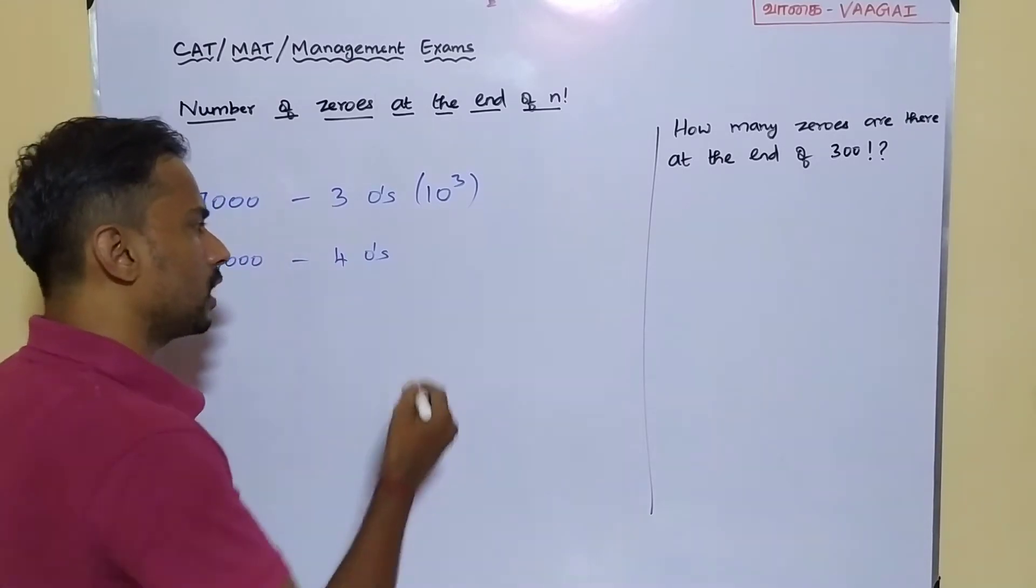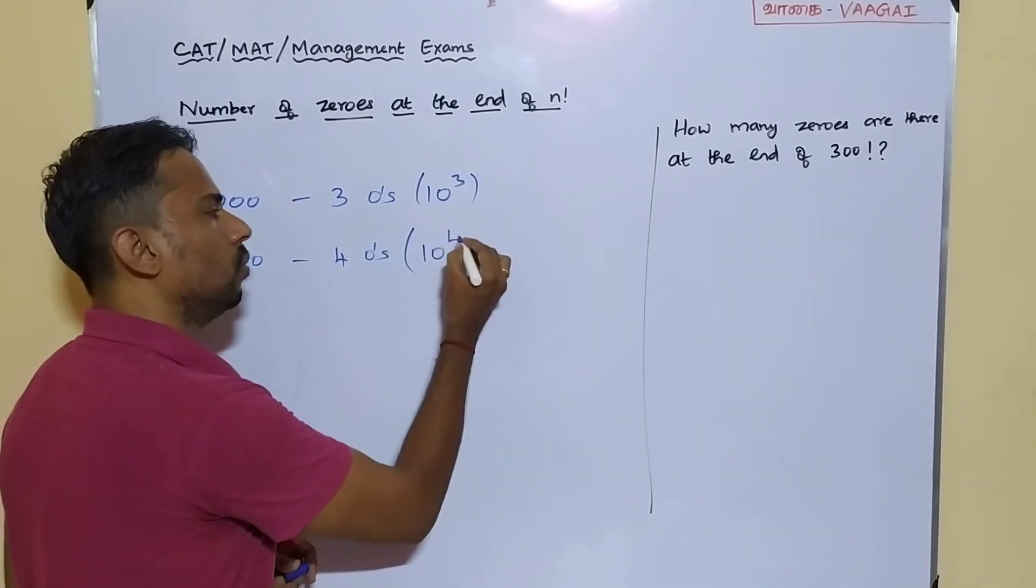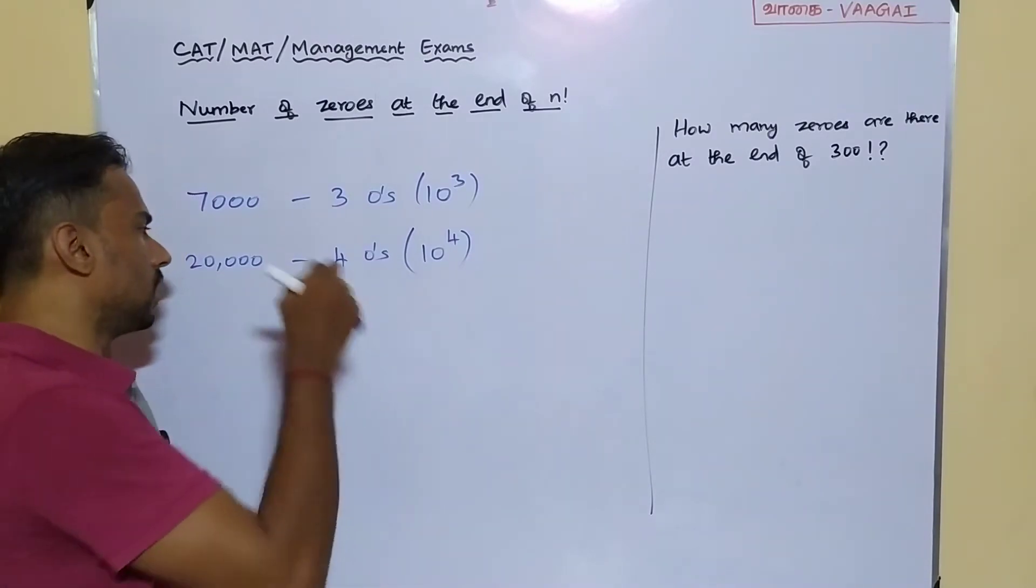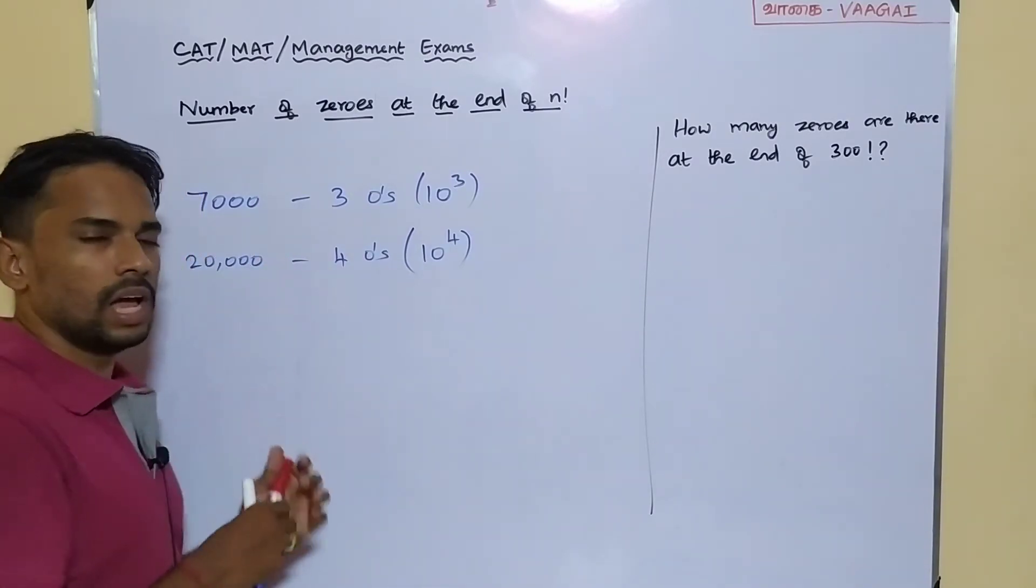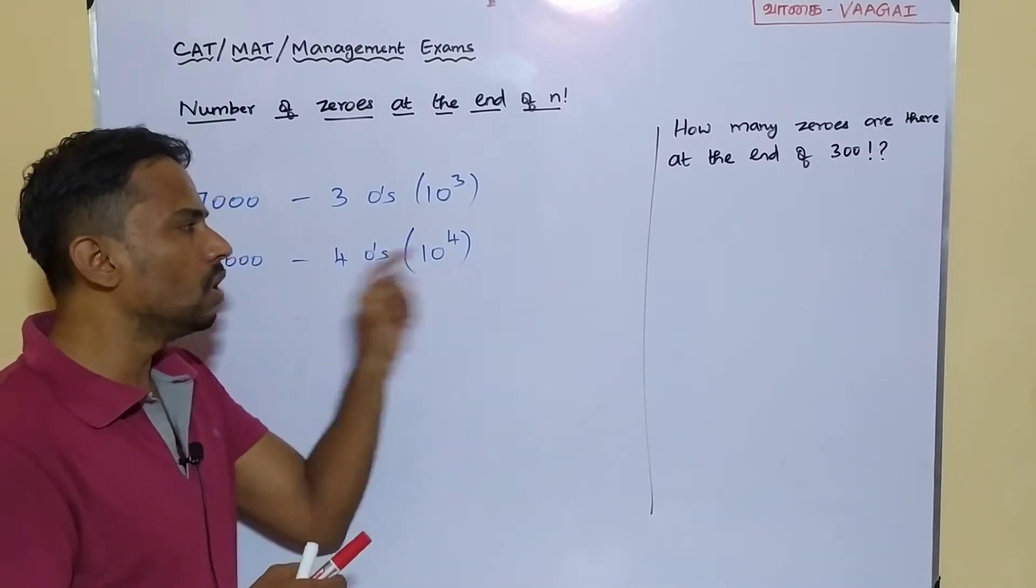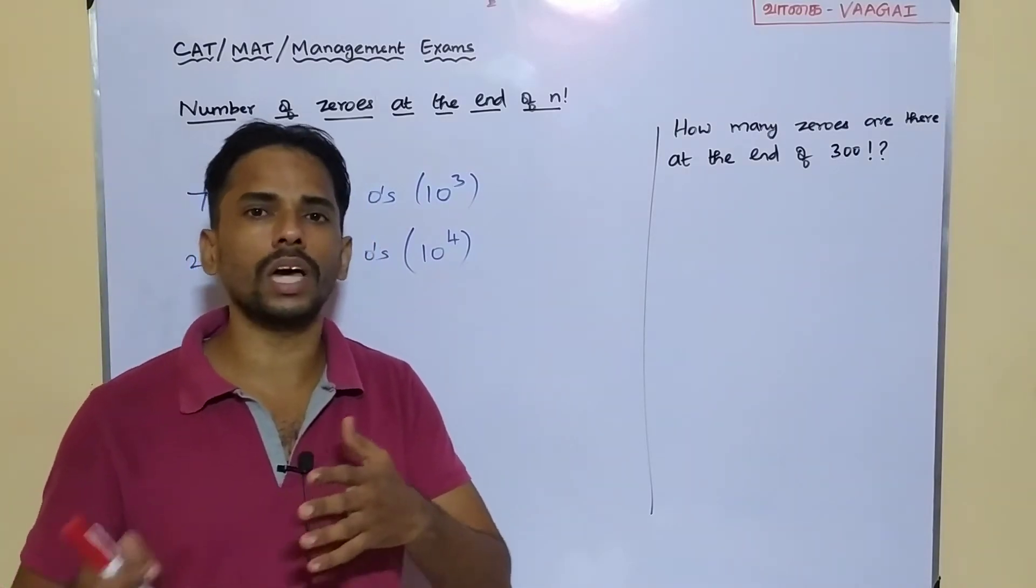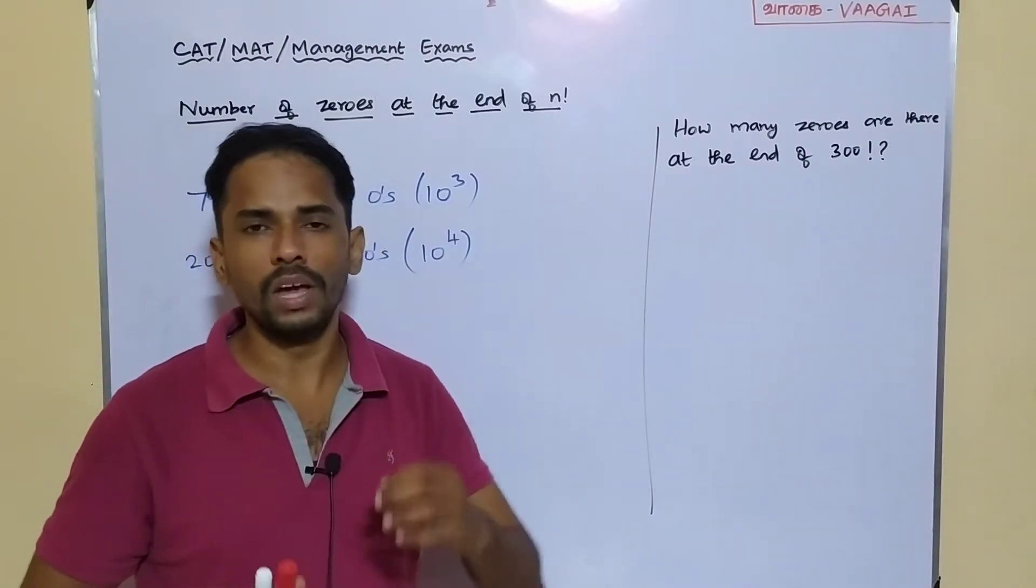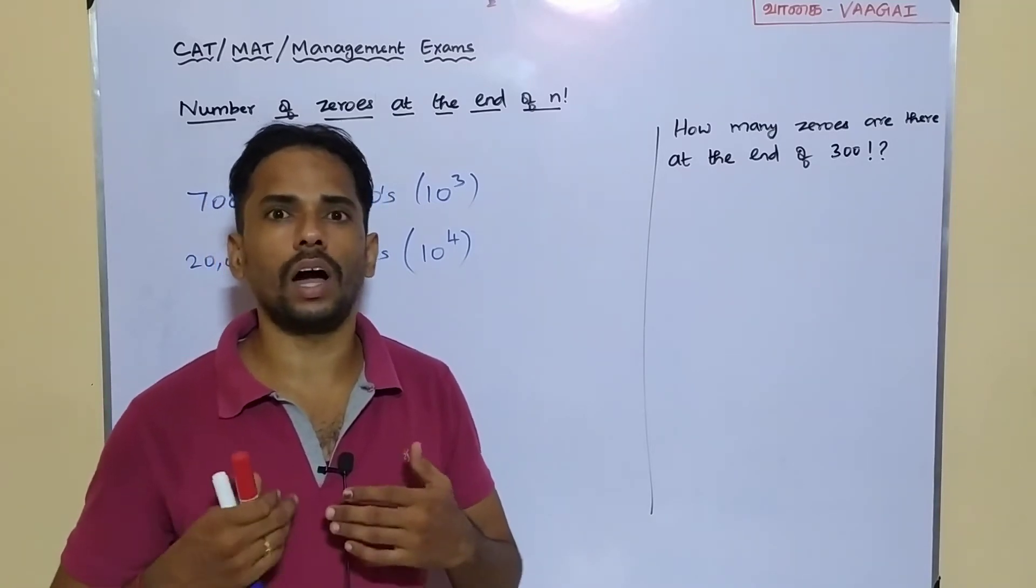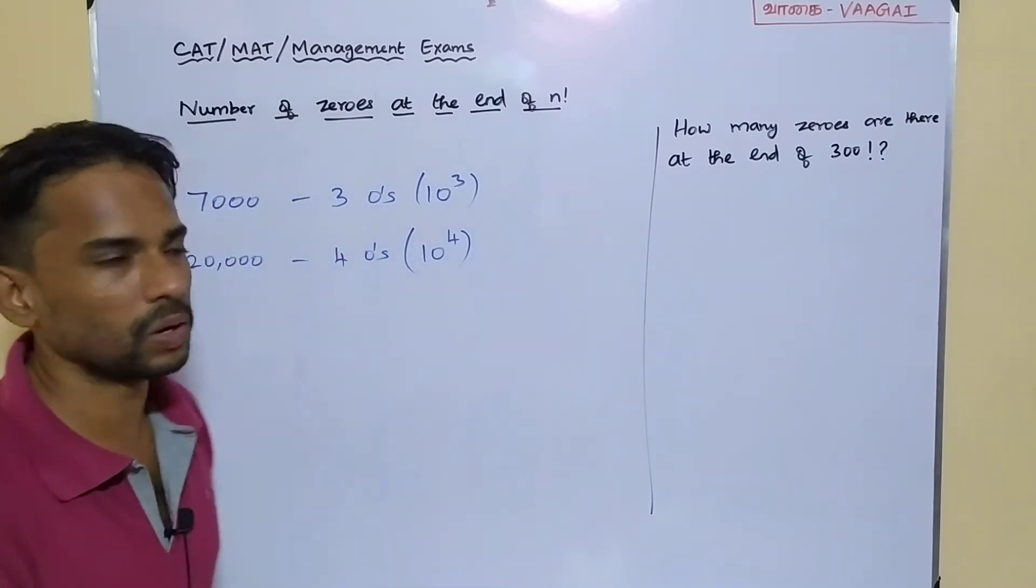Same way here, our number is 20,000, and 20,000 can be expressed as 2 into 10 power 4. That means I have got maximum four tens or 10 power 4 inside this 20,000, and that's the reason 20,000 is ending up with four zeros. So if we need to think about how many zeros are there at the end of our number, very simple: we can just observe what is the maximum or what is the highest power of 10 available in our value.